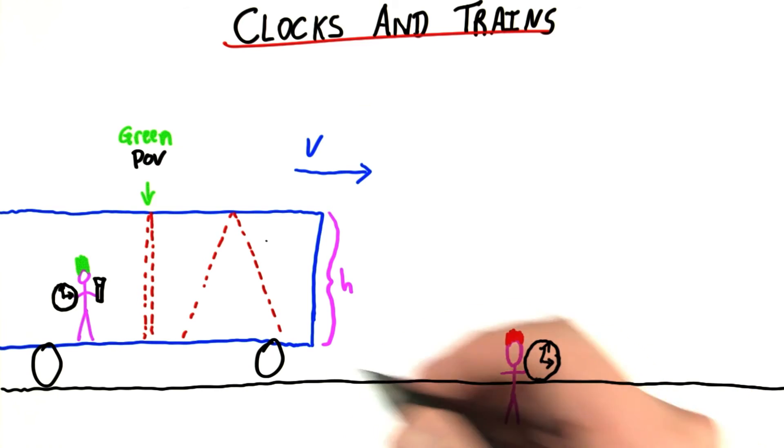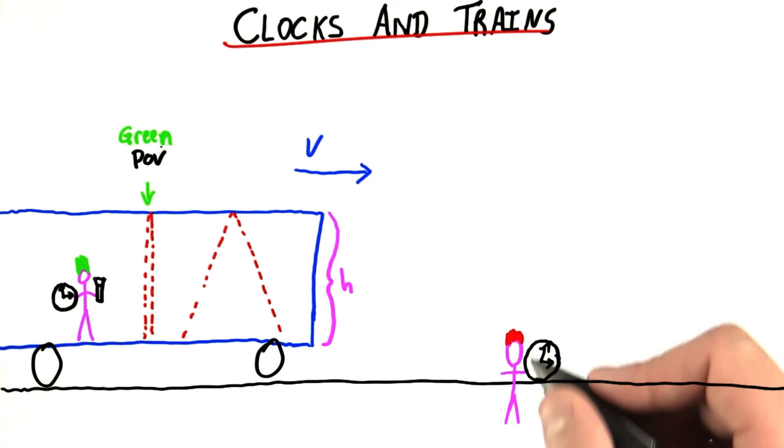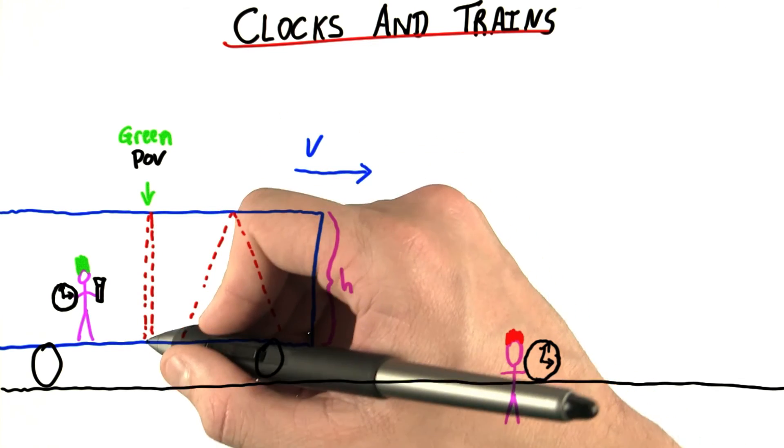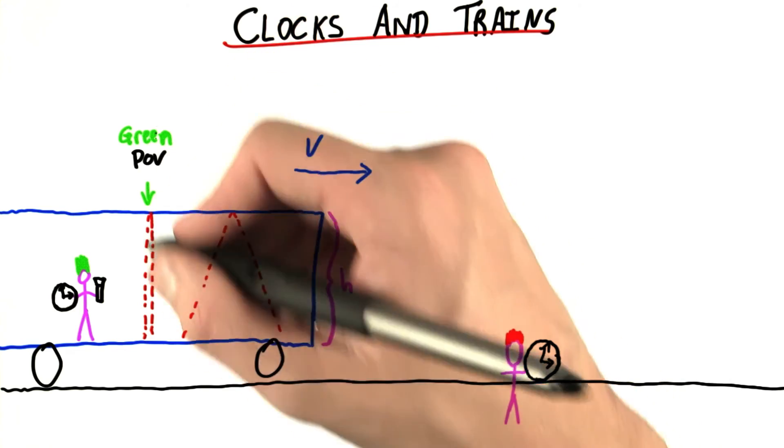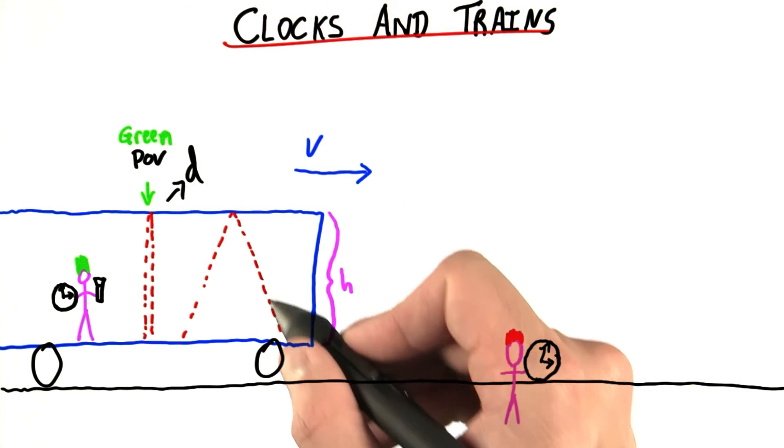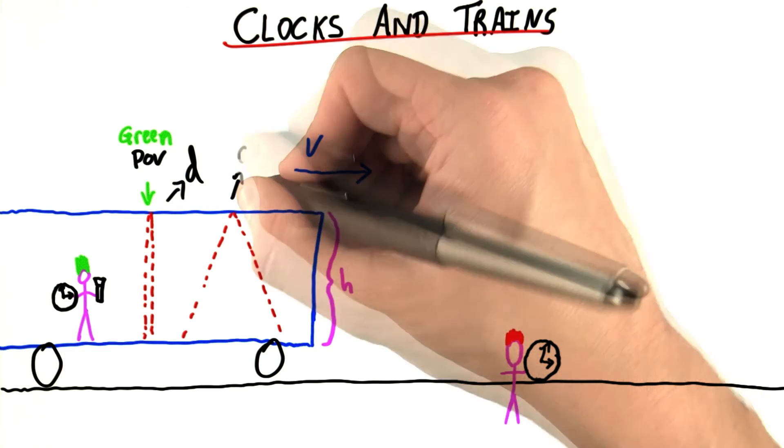We've got our two frames of reference, the green frame and the red frame. The light seems to take different trajectories in each frame. Let's call this total distance traveled up and down in the green frame equal to d, and the total distance the light spends traveling in the red frame, d prime.